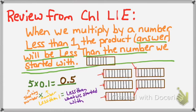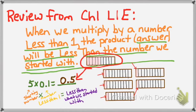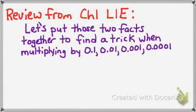What would 5 tenths look like on a Hershey bar? My Hershey bar broken into 10 sections, and I have 5 of them. Do I have a whole Hershey bar? No — that's why my whole number is 0, and then I have my 5 tenths: 0 and 5 tenths. I multiplied my starting number 5 by a number less than 1 — 1 tenth — and my answer, 5 tenths, was less than the number I started with.